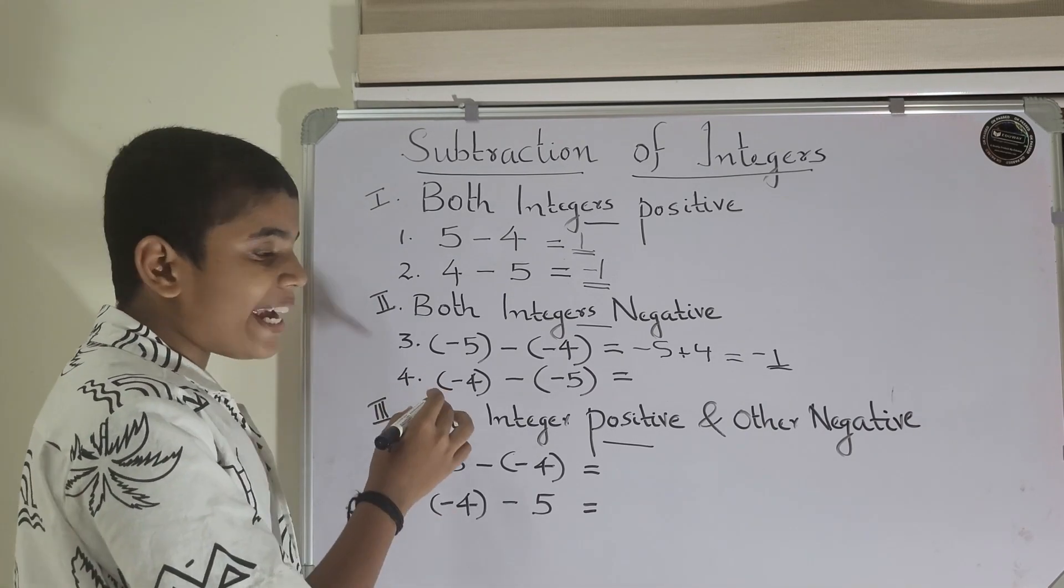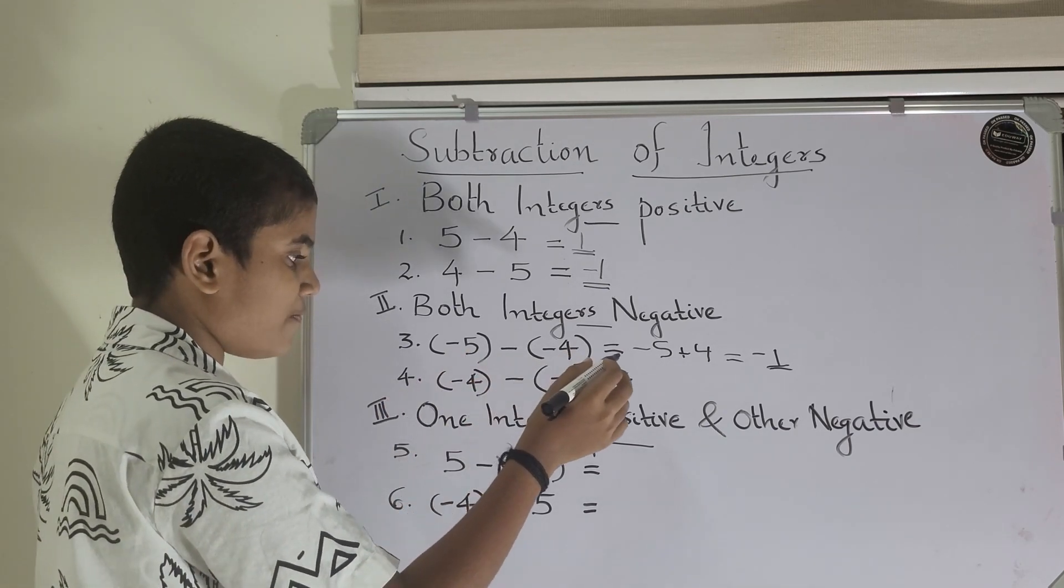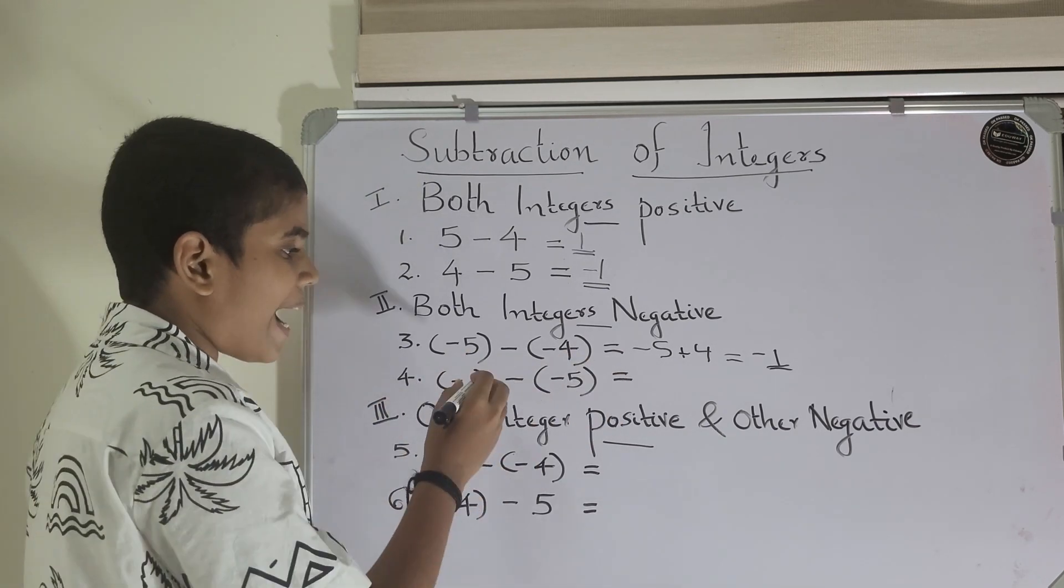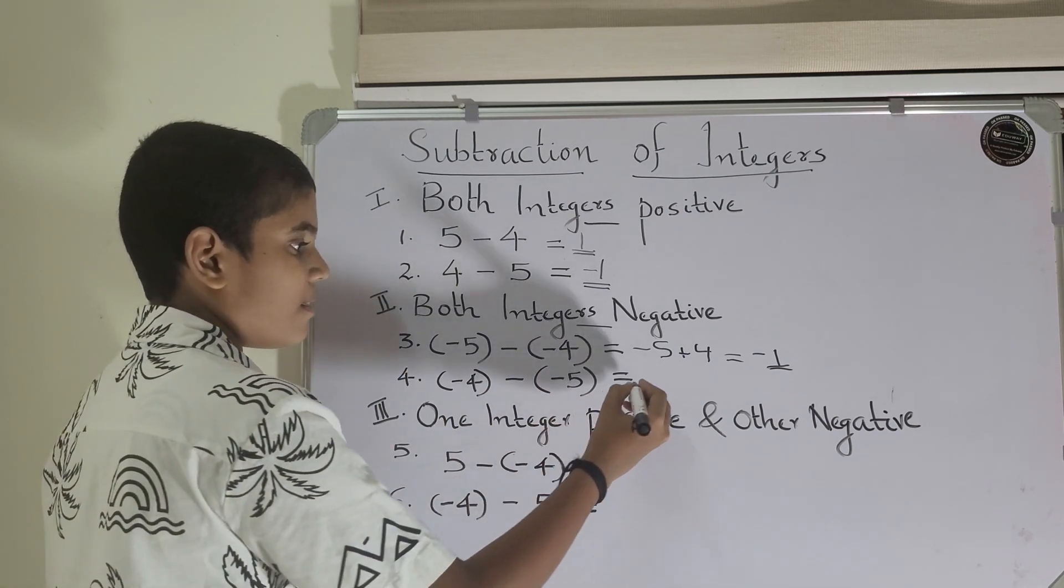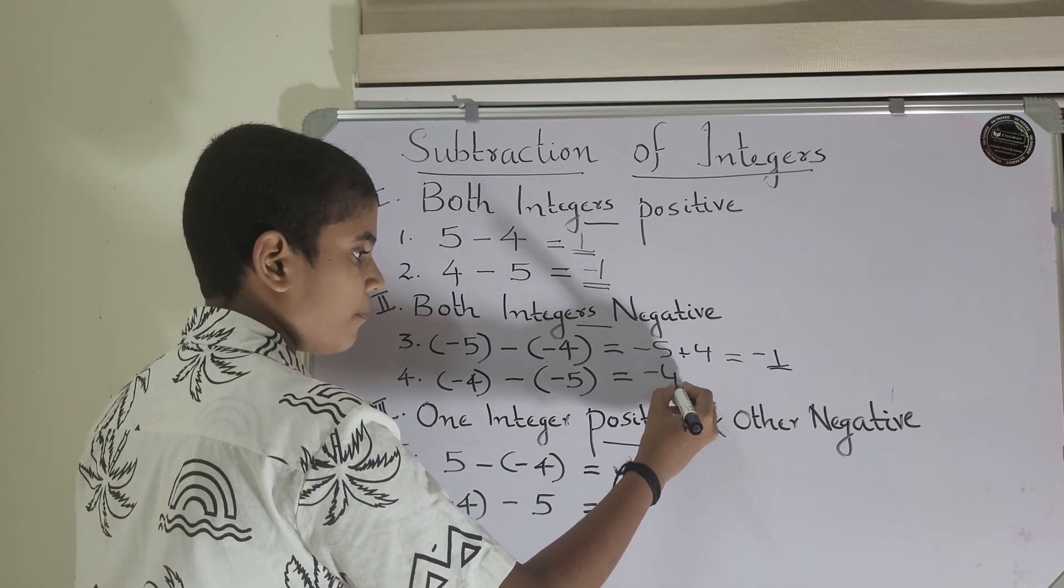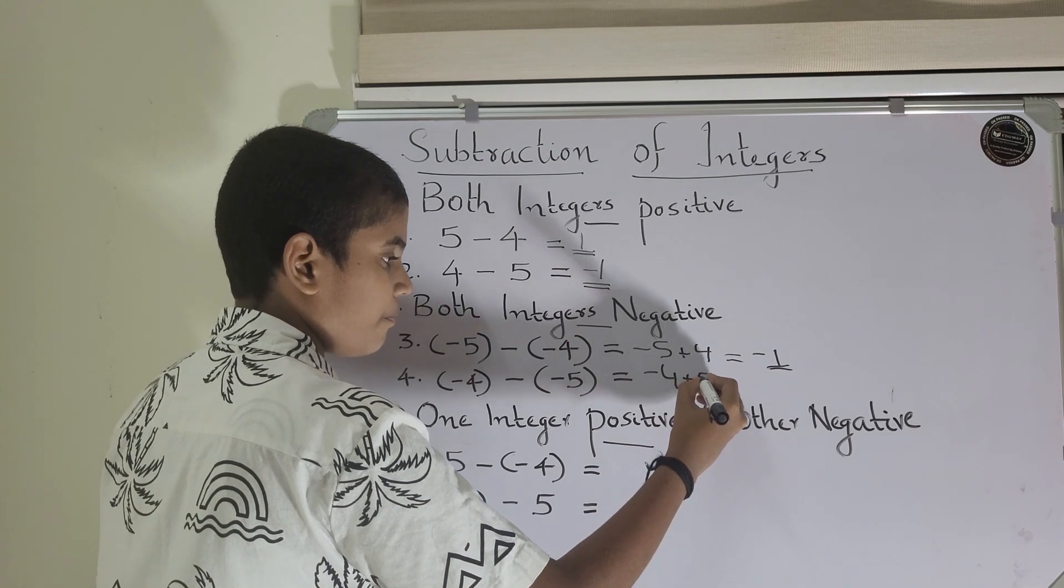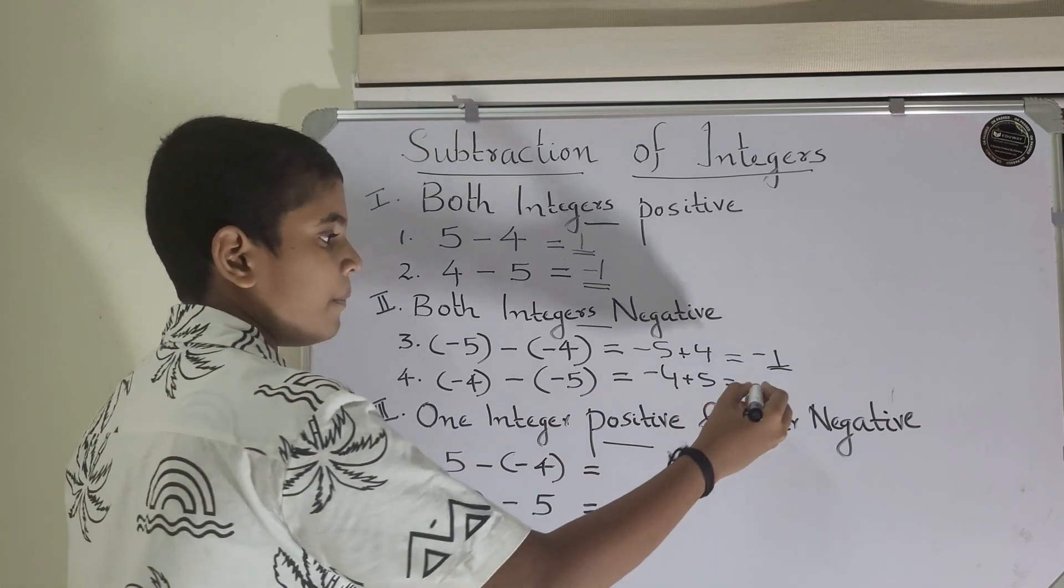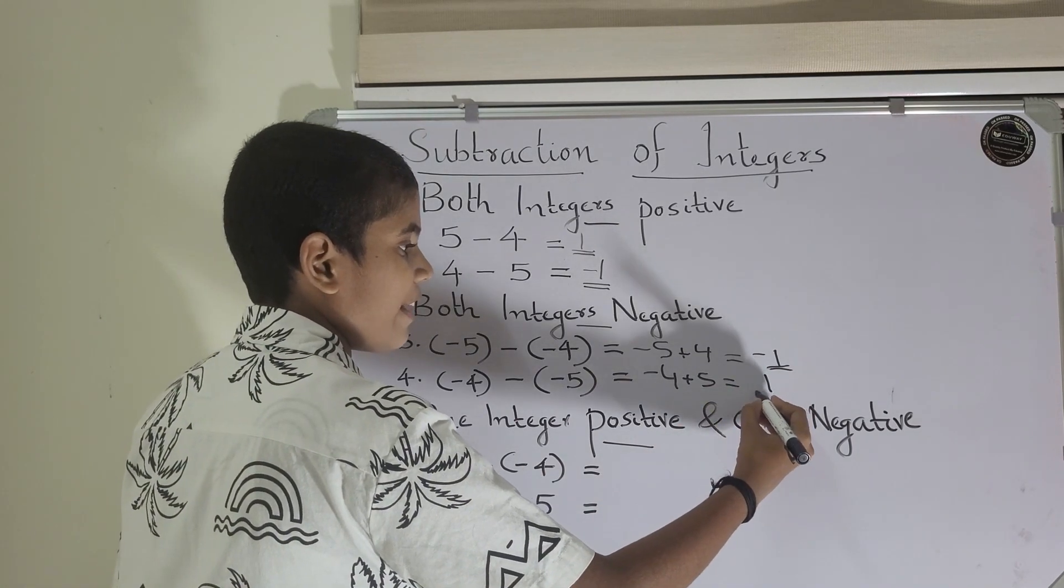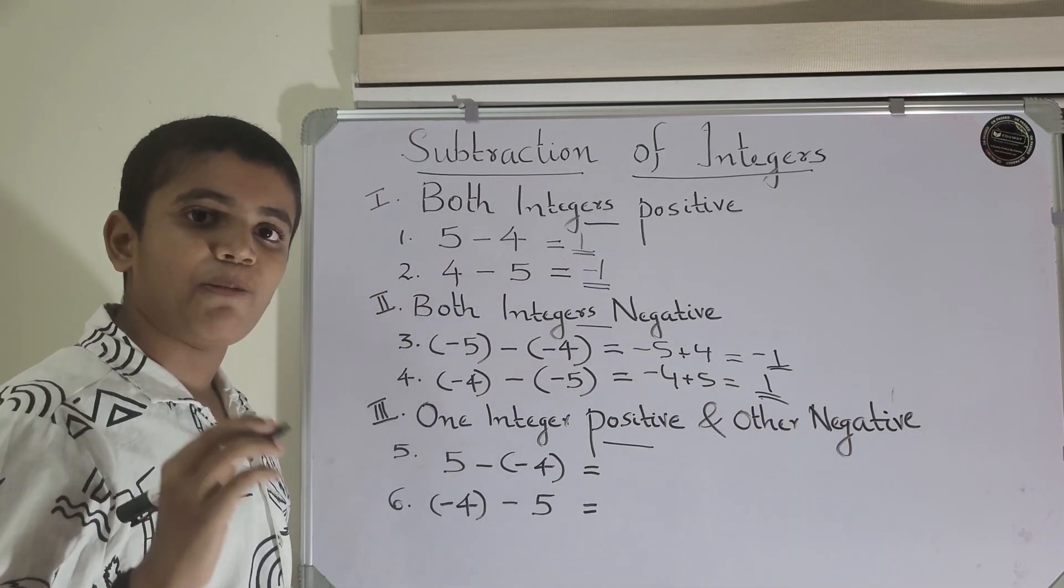Next, minus 4 minus minus 5. Here also, minus times minus equals plus. So, I can rewrite it as minus 4 plus 5. So, 5 minus 4 equals 1. The greater number here is 5, and the sign of 5 is positive. So, it will be positive 1.